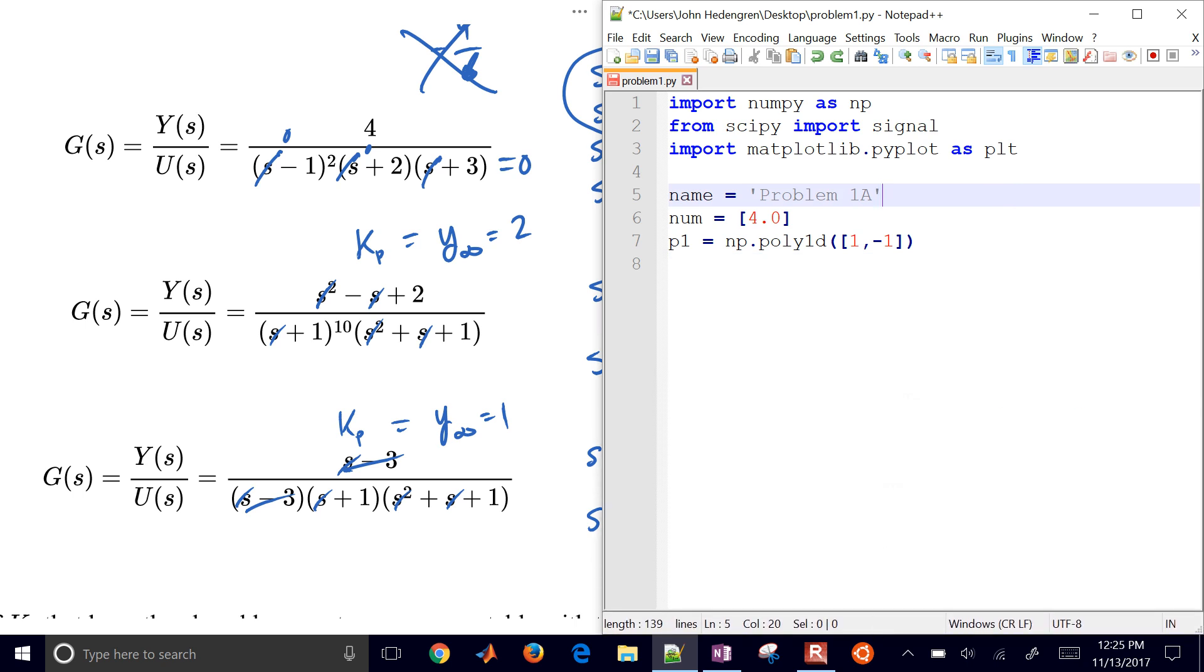We have just 1, negative 1, and then we have 1, 2, so that's going to be s plus 2. And then we have 1, 3 for the s plus 3, and then we're going to just multiply those together. I'll use the poly 1d from numpy to create my polynomials, and then just multiply those together.